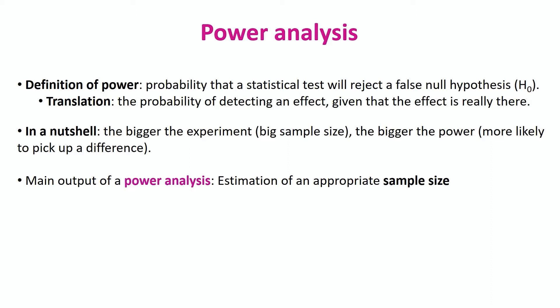So the main output of a power analysis is the estimation of an appropriate sample size. And it is super important for several reasons. First, it could be that our sample is too big, which would be a waste of resources and an ethical issue if we work with mice, for instance. Or our sample could be too small, so we might miss a genuine effect because we don't have enough power.